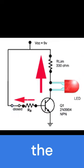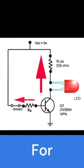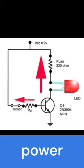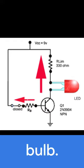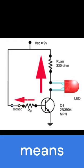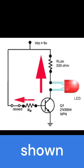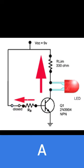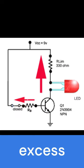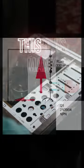When a current is passed through the base of the transistor, the transistor allows for the flow of current. For example, to power a bulb. The base can be triggered by means of a switch, as shown above. A resistor may also be used to limit excess current.